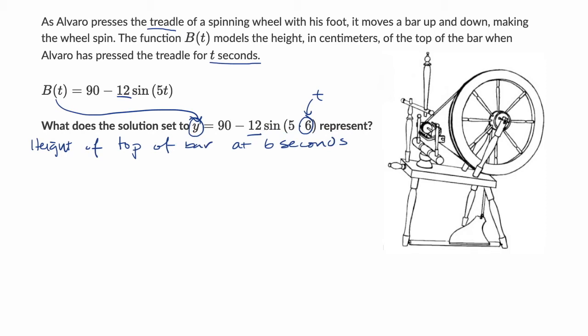Now we have more questions here. The next question asks us, what does the solution set to 95 equals 90 minus 12 sine of 5t represent? Pause the video and think about that.